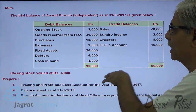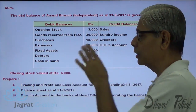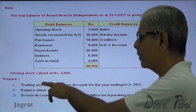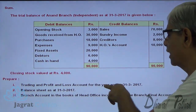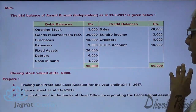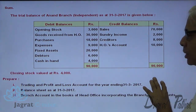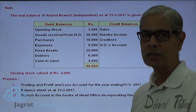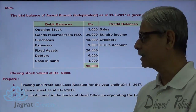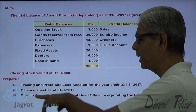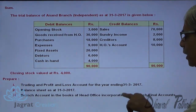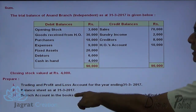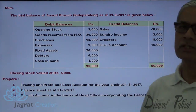These are the credit balances, these are the debit balances, closing stock — one adjustment is given. Trading profit and loss account for the year ended on 31-3-2017 needs to be prepared. Balance sheet as on 31-3-2017 needs to be prepared. Branch account in the books of head office to incorporate the branch finance — this is the most important question.